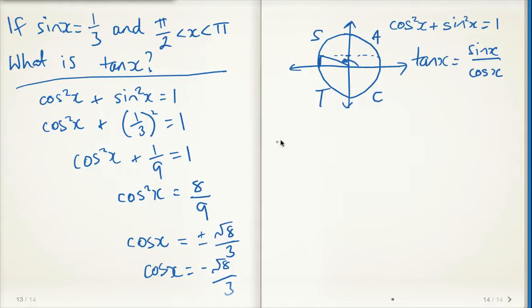All right, so I can go over here and get another color. All right, so now the next part of the question, what is tan x? Well, I know that tan x is sine x over cos x. Okay, I have sine x from the question. It's one third.